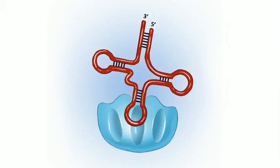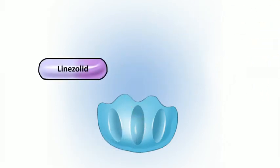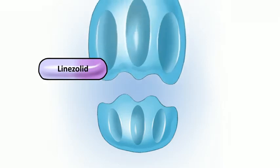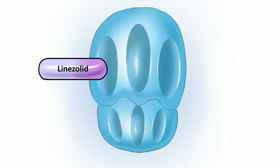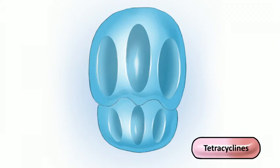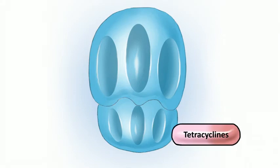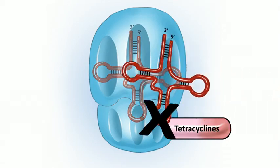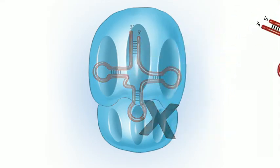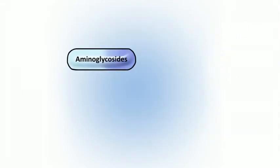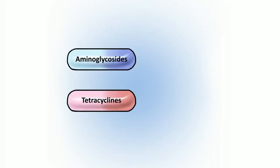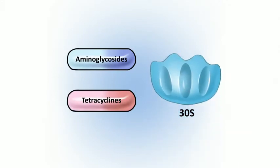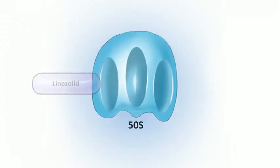Aminoglycosides like gentamicin bind to the 30S subunit early, even before initiation, so it can't pair up with the starter tRNA. Linezolid also inhibits initiation but works by binding to the 50S subunit instead. Tetracyclines bind to the 30S ribosomal subunit later and prevent aminoacyl-tRNA from getting to the A site.